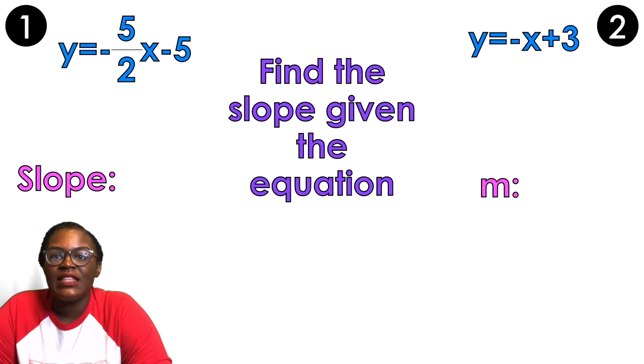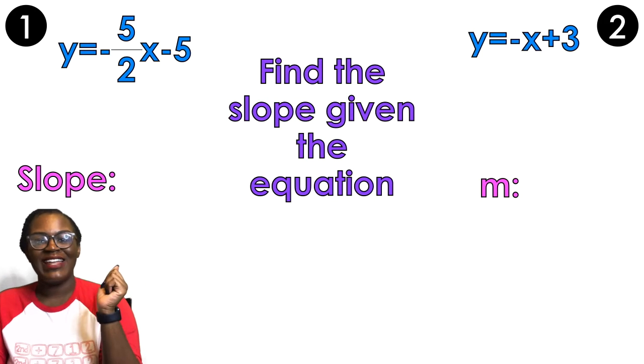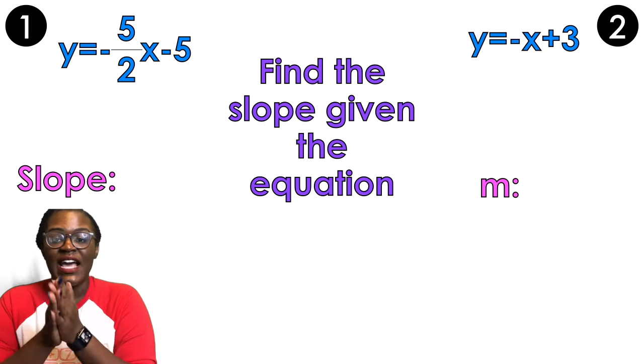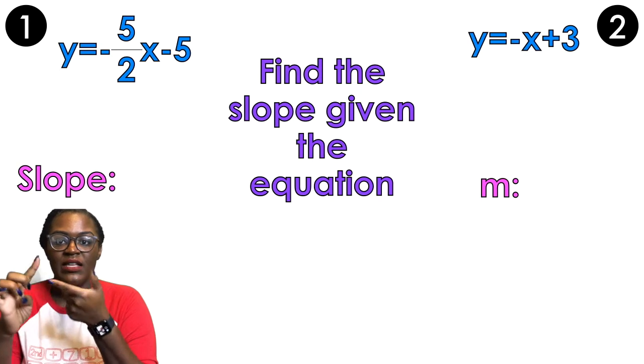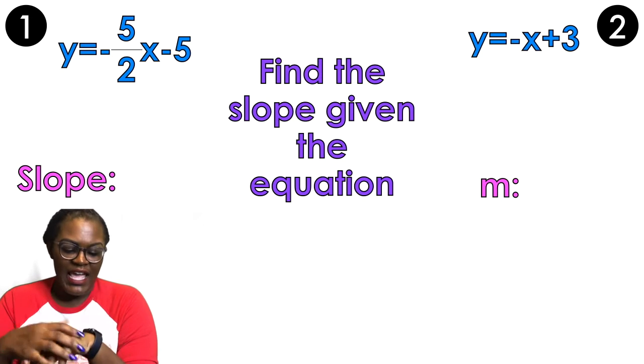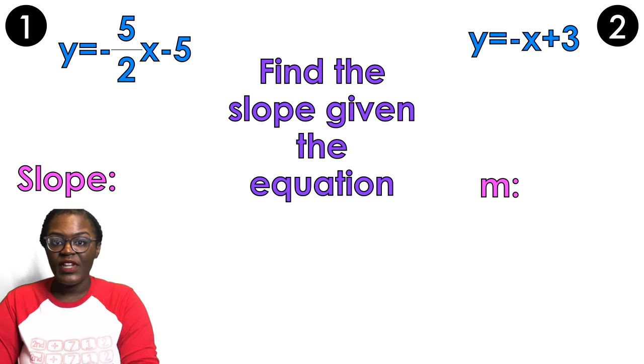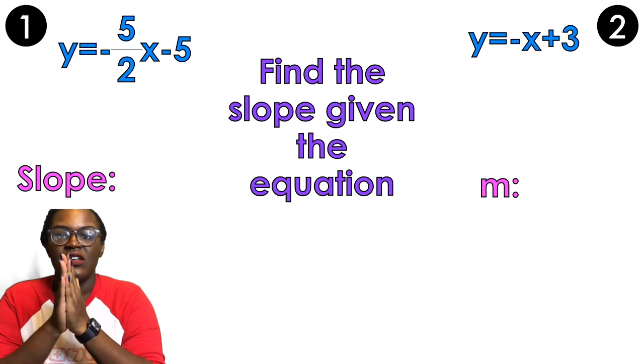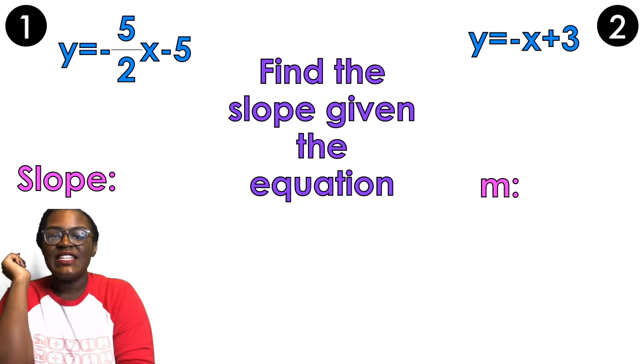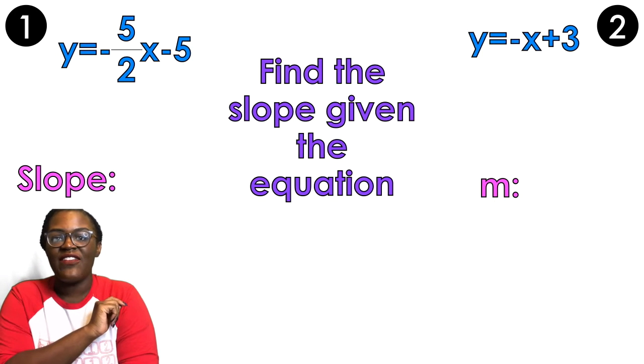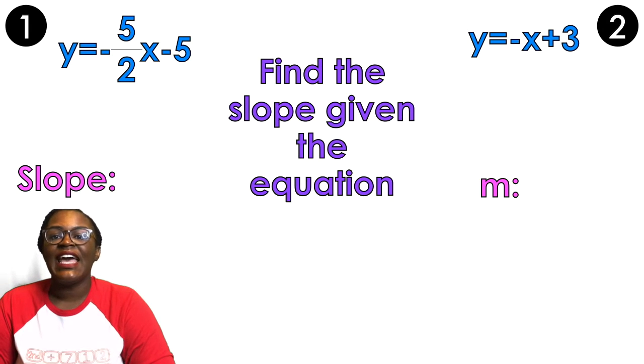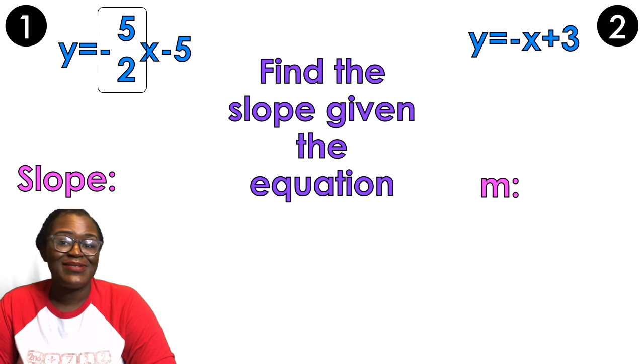Example number one. This is gonna be a really quick video. Y is already isolated, so that means Y equals MX plus B, and the M is always gonna be your slope. So that's the number that's attached to the X, touching it. In this case, I have Y equals negative 5 over 2 X minus 5. And so guess what my slope is? My slope is negative 5 halves. Ta-da!